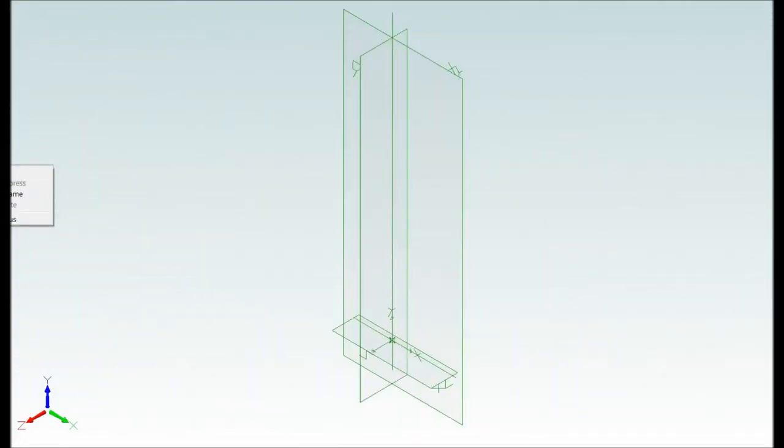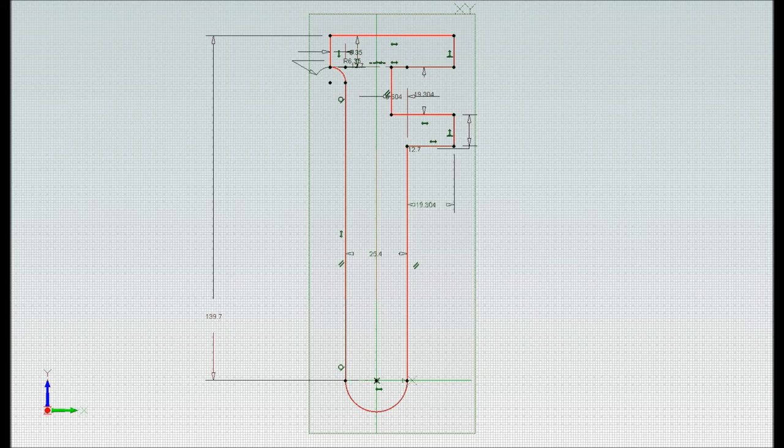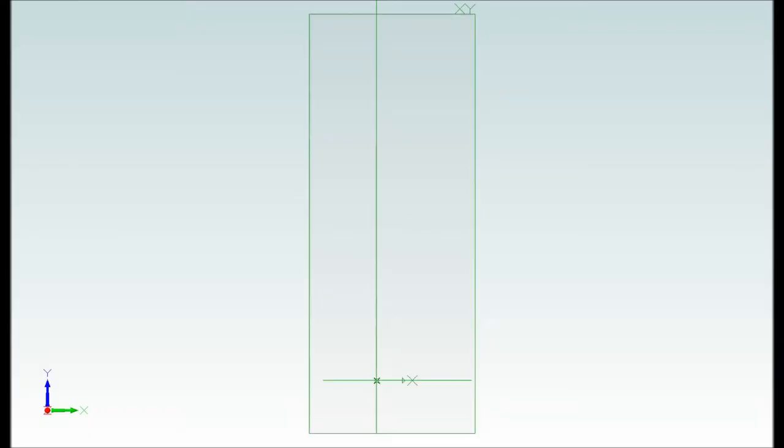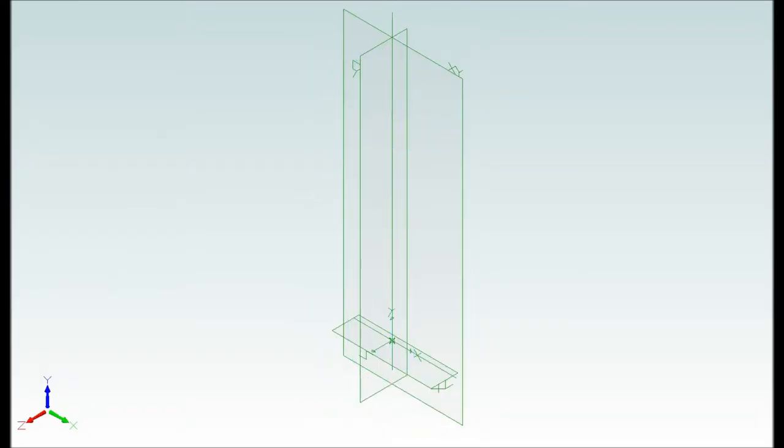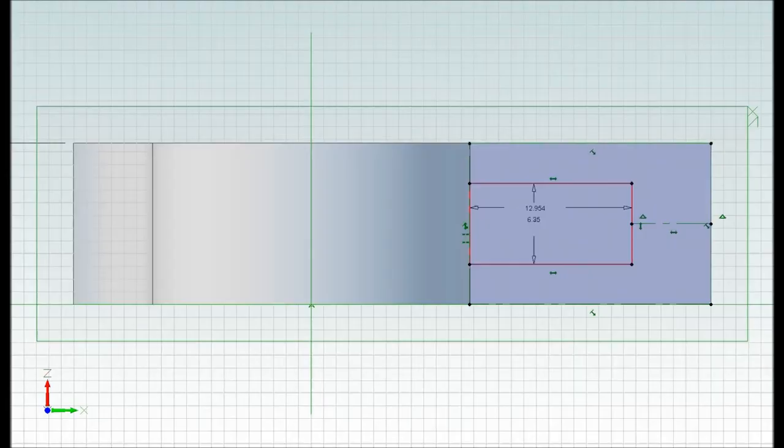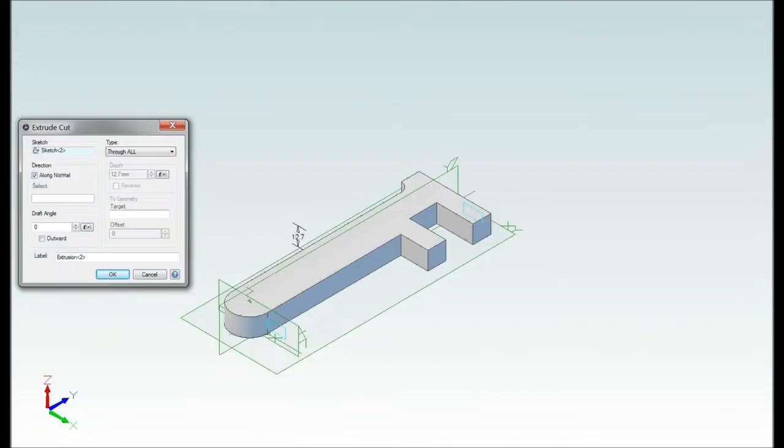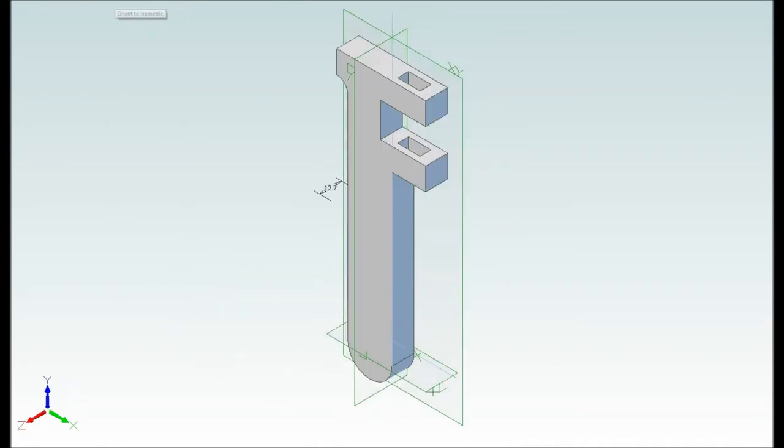To create the handle part of the pipe wrench, the dimensions were transferred to a 2D sketch. The sketch was then extruded to create a 3D shape. To finish the handle, the hole where the top piece is inserted is cut out from the model.